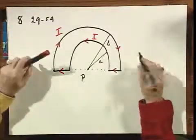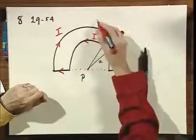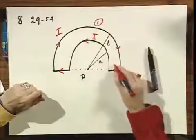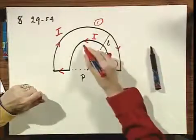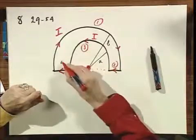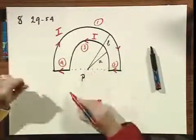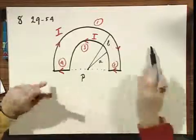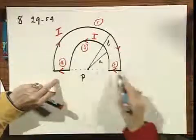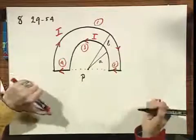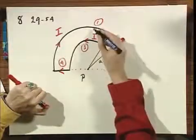Well if we again give these lines numbers one, two, three, four, then it's immediately obvious that two and four do not contribute to the magnetic field at P because the sine of theta equals zero in this cross product. So we only deal with three and with one.